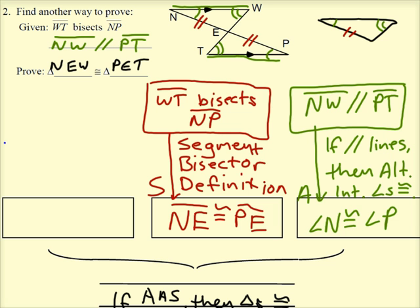And you'll notice that the red segment is only connected to one of the angles. It's only connected directly to that angle N. So we'll be using AAS.